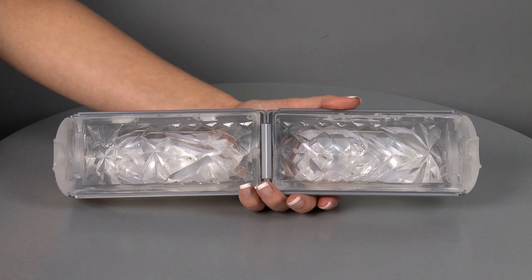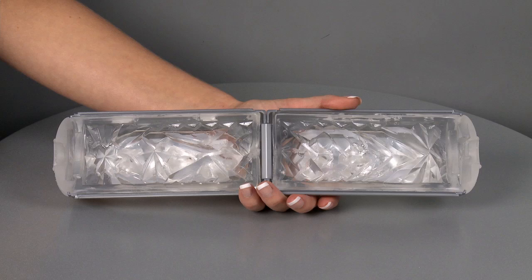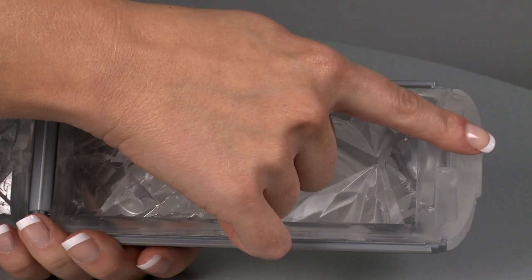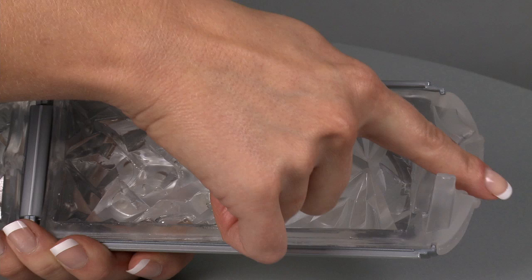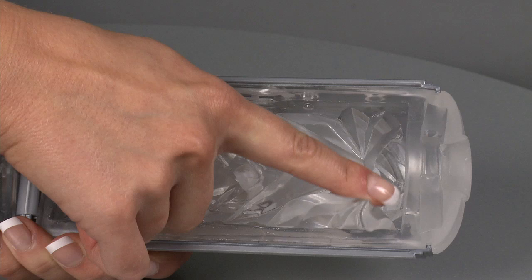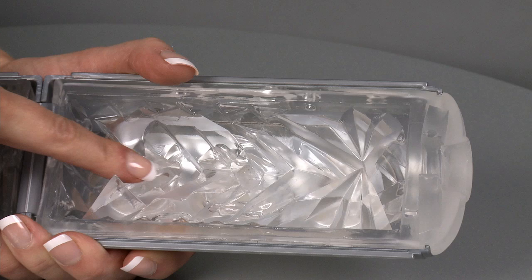Now lastly there's the silver, which is the latest addition to the Tenga flip hole range. Like the red it measures 6 inches internal length and the opening is 0.75 of an inch, so again it offers really tight sensations as you enter the toy. Looking inside you can see it's filled with all these raised triangular shapes, which deliver incredible sensations from every angle as you stroke.